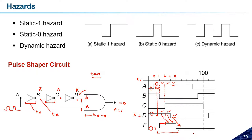If the time delay td for each individual gate were zero, then F would always be low. But since there is some delay, we get a pulse at output F. This is what we call the pulse separator circuit, and a similar concept applies to hazards. If you have any doubt on how this waveform is produced, please ask before we move ahead.